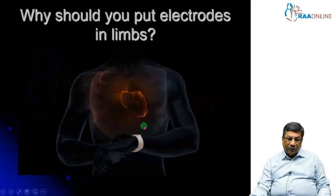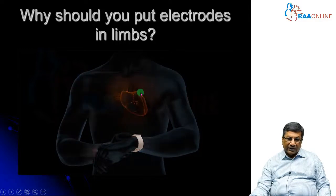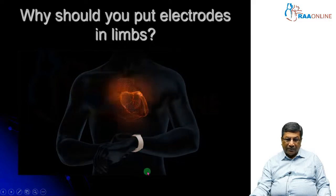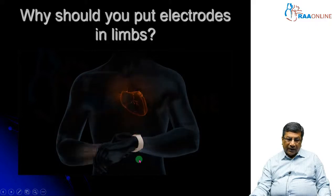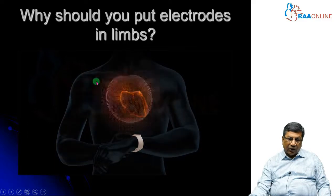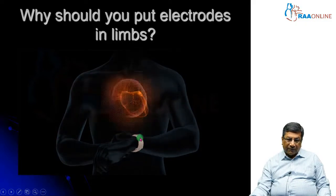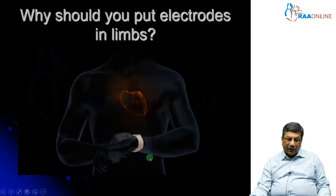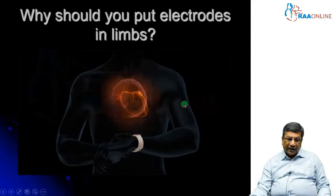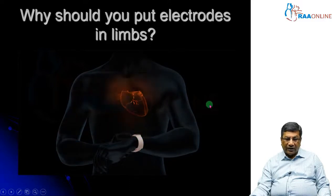You must understand why we put electrodes on the upper limbs and the lower limbs. The heart is in the center of the chest, not in the limbs — yet we place electrodes there. This is because the sinus node current is not confined to the heart; it spreads all over the body through blood and body fluids. We utilize this property to see the electrical activity of the heart from the limbs. From the lower limbs, we try to see the inferior surface of the heart; from the right and left upper limbs, we try to see the lateral and medial surfaces.